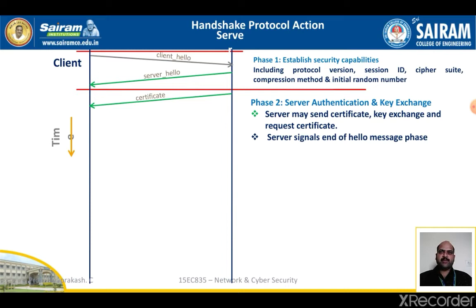The hash covers not only the Diffie-Hellman or RSA parameters but also the two nonces from the initial hello messages. This ensures against replay attacks and misrepresentation. In the case of a DSS signature, the hash is performed using the SHA-1 algorithm. In the case of an RSA signature, both MD5 and SHA-1 hashes are calculated, and the concatenation of these two hashes consisting of 36 bytes is encrypted with the server's private key.